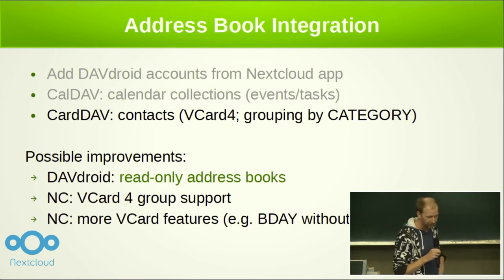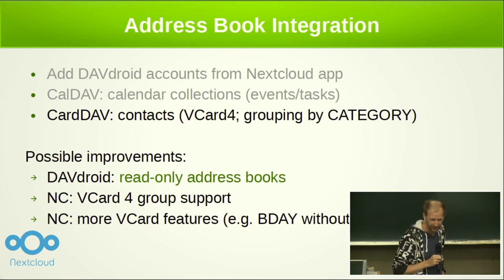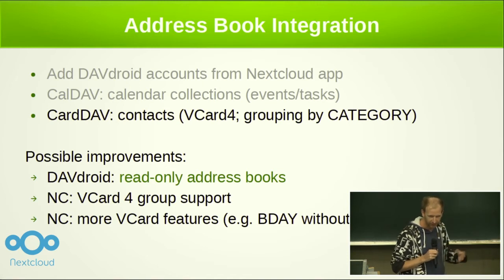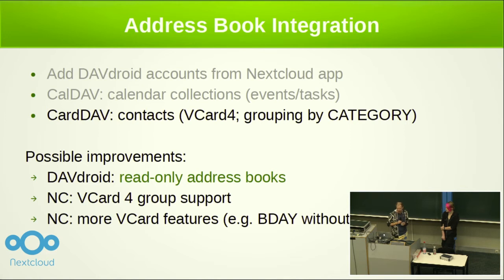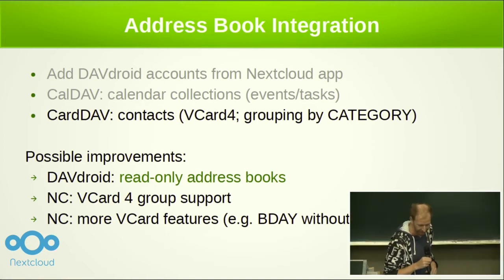Then we come to the CardDAV part. Currently Nextcloud is supporting vCard 4, which is great, and the grouping is done by the category field. Now in vCard 4 you have another kind of grouping method, and it would be nice if this could be implemented. It would also be cool to have more vCard features. DAVDroid is already supporting birthdays without a year, and there is more that can be improved on that side.